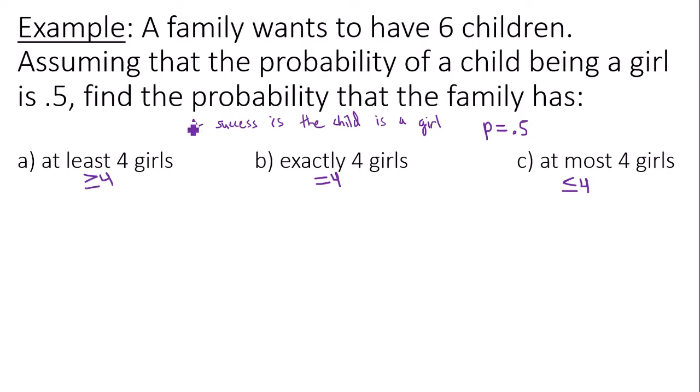So the Google Sheets input for each of these. At least four girls. Well, first off, the number of trials or children being born is six. The probability of a success is 0.5. This stays the same for every single scenario. This never changes.